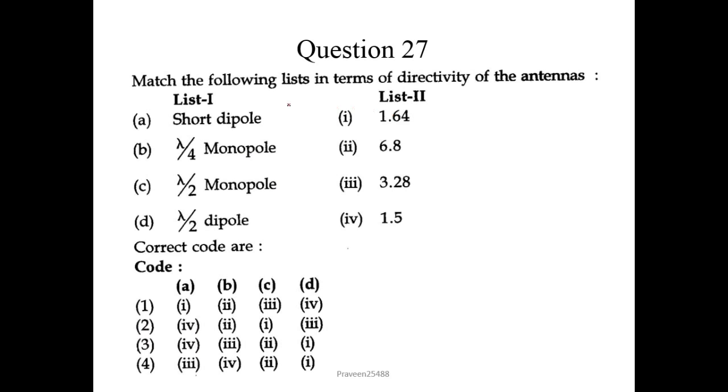Now question number 27. Match the following list in terms of directivity of the antennas. So we know that short dipole antenna directivity is 1.5. For lambda by 4 monopole antenna, it is 3.28. For lambda by 2 monopole antenna, it is 6.8. And for lambda by 2 dipole antenna, it is 1.64. So correct order would be 4, 3, 2, 1. Third one would be the correct answer.